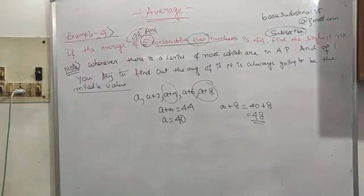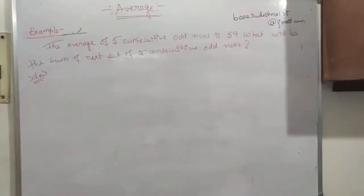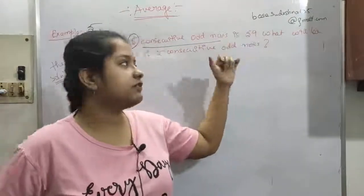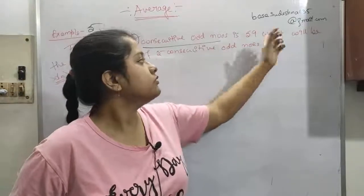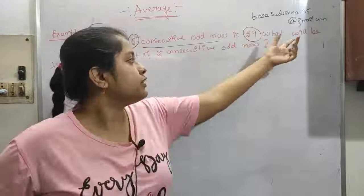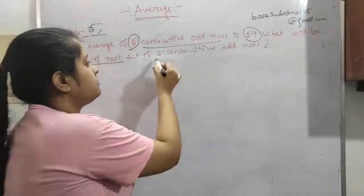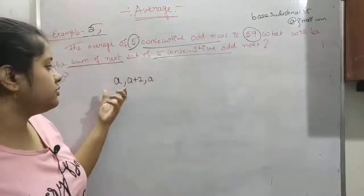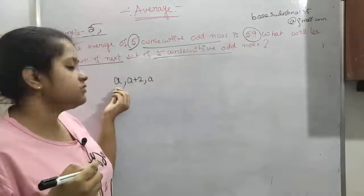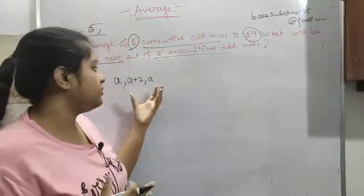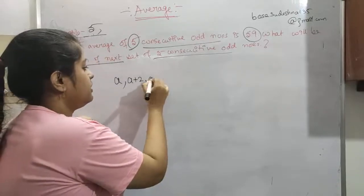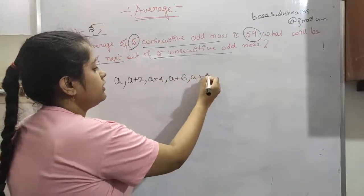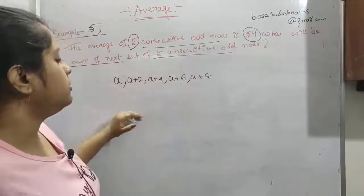Now: the average of 5 consecutive odd numbers is 59. Previously it was 5 consecutive even numbers, now it is 5 consecutive odd numbers. For consecutive odd numbers: a, a+2, a+4, a+6, a+8 — or you can take a+1, a+3, and so on. The average is the middle one, so this is 59.